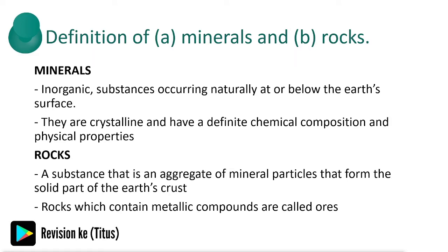Minerals are inorganic substances occurring naturally at or below the earth's surface. They are crystalline and have a definite chemical composition and physical properties. A rock is a substance that is an aggregate of mineral particles that form the solid part of the earth's crust. Rocks which contain metallic components are called ores. The key point is that a rock is an aggregate of mineral particles, so we need to define minerals to understand what they are when defining a rock.